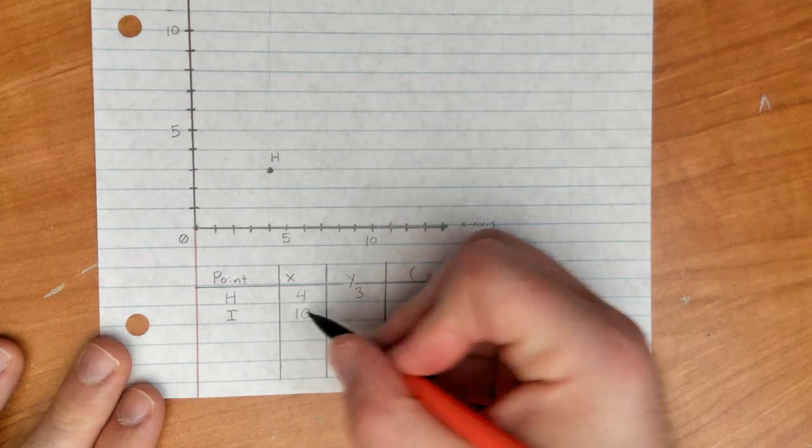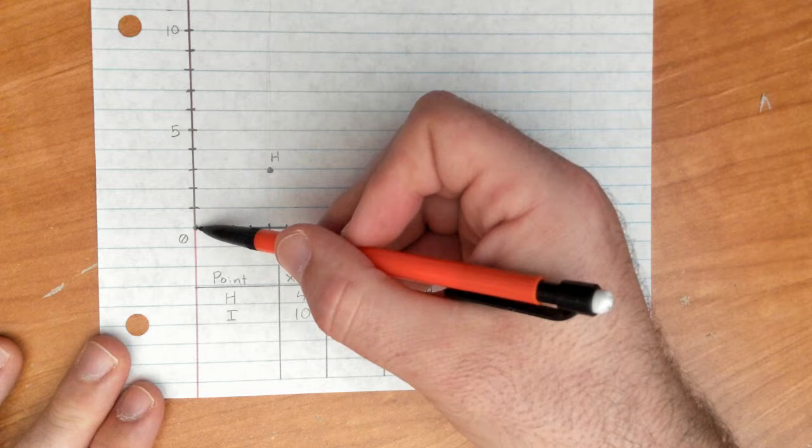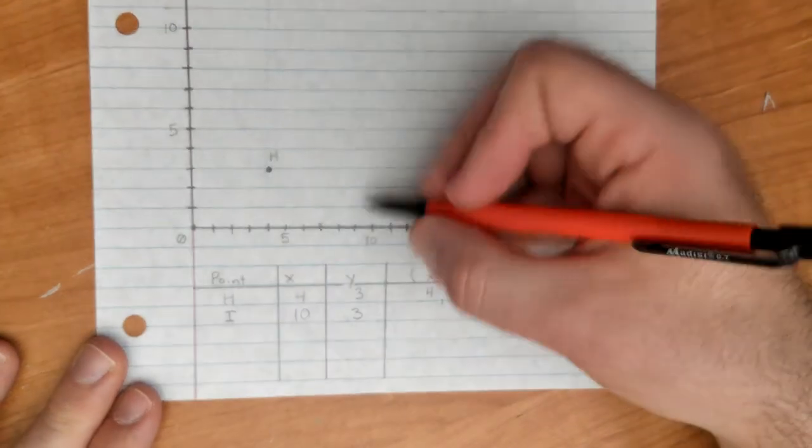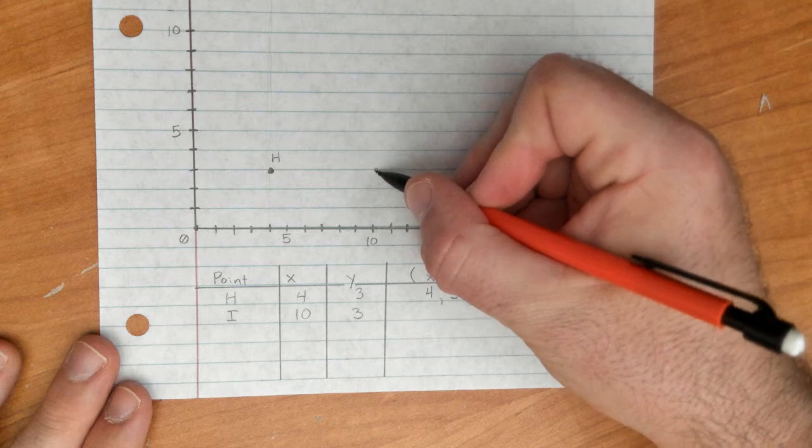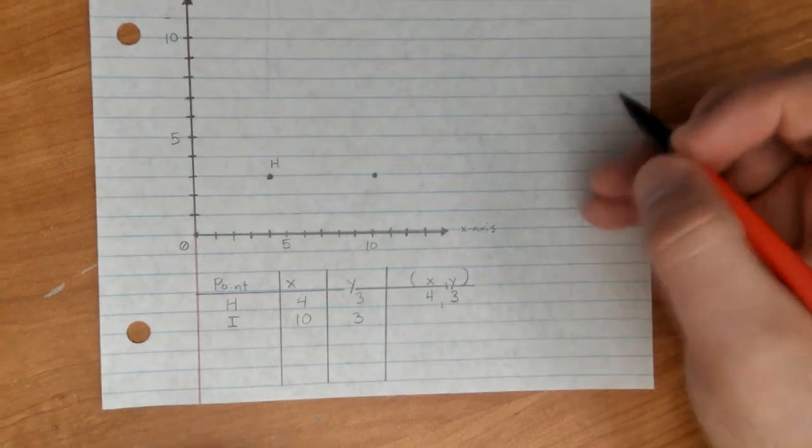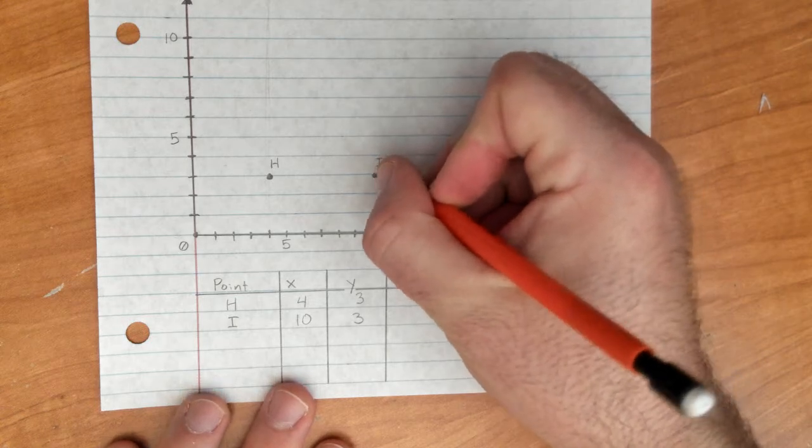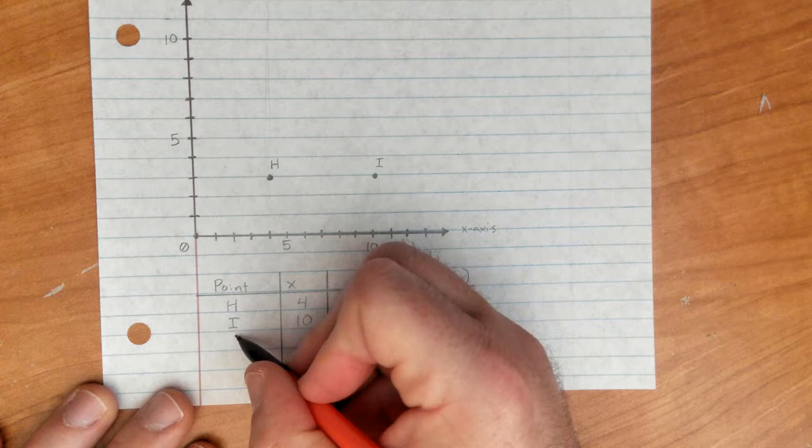All right, let's pick it up a little bit. You can always pause the video if you need a little more time. For I, x-coordinate is 10, y-coordinate is 3. So we're going to count over 10, five, 10, and then up three. One, two, three. Again, the lines make it very easy. So that is going to be I.